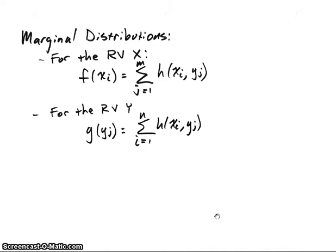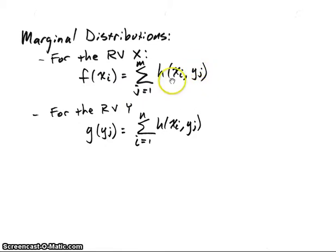If we know the joint distribution function for random variables X and Y, we can get the distribution functions for each of those random variables individually. For X, we had the function F of X, which we called the distribution function. Since we're starting with a joint distribution function, we'll call this the marginal distribution function for X. Since H is a two-dimensional function and we just want a one-dimensional function, we'll sum over all the Y values for each specific X value — essentially getting rid of the Y values. Similarly, if we want a function for Y, we'll sum up over all the X values for each Y value. This will be clear in the examples.